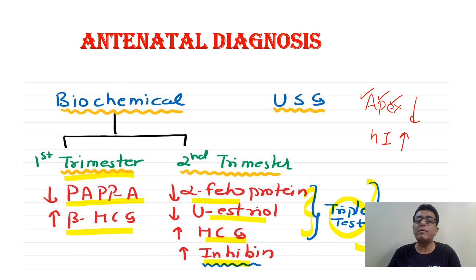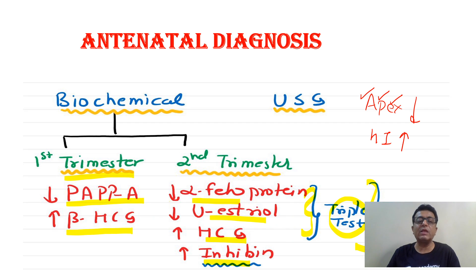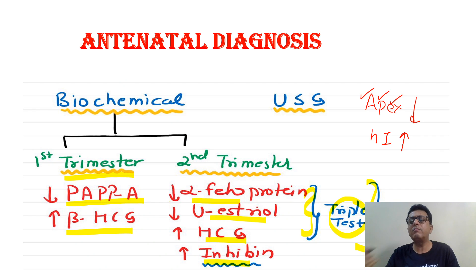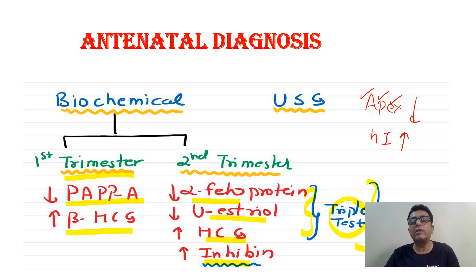You need to remember which increase, which decrease, and what markers are used in first trimester versus second trimester. This is a memory-based question. The fourth marker added in the quadruple test is inhibin. This is about the antenatal diagnosis of Down syndrome — biochemical markers.